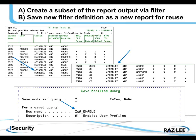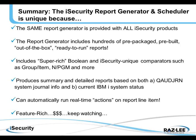We can also create a subset of the report output via the filter and save the new filter definition as a new report for reuse. If this is the output on the left, I can get a subset of only those that are enabled, save the modified query, give it a new name — for example, $A for all enabled user profiles — and I've generated a new report for reuse.